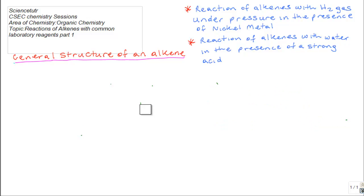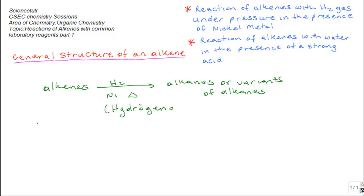Now let's do a review. We know that when alkenes react with hydrogen in the presence of nickel or a metal catalyst at a certain temperature, they give alkanes or variants of alkanes. Now, this is known as hydrogenation.